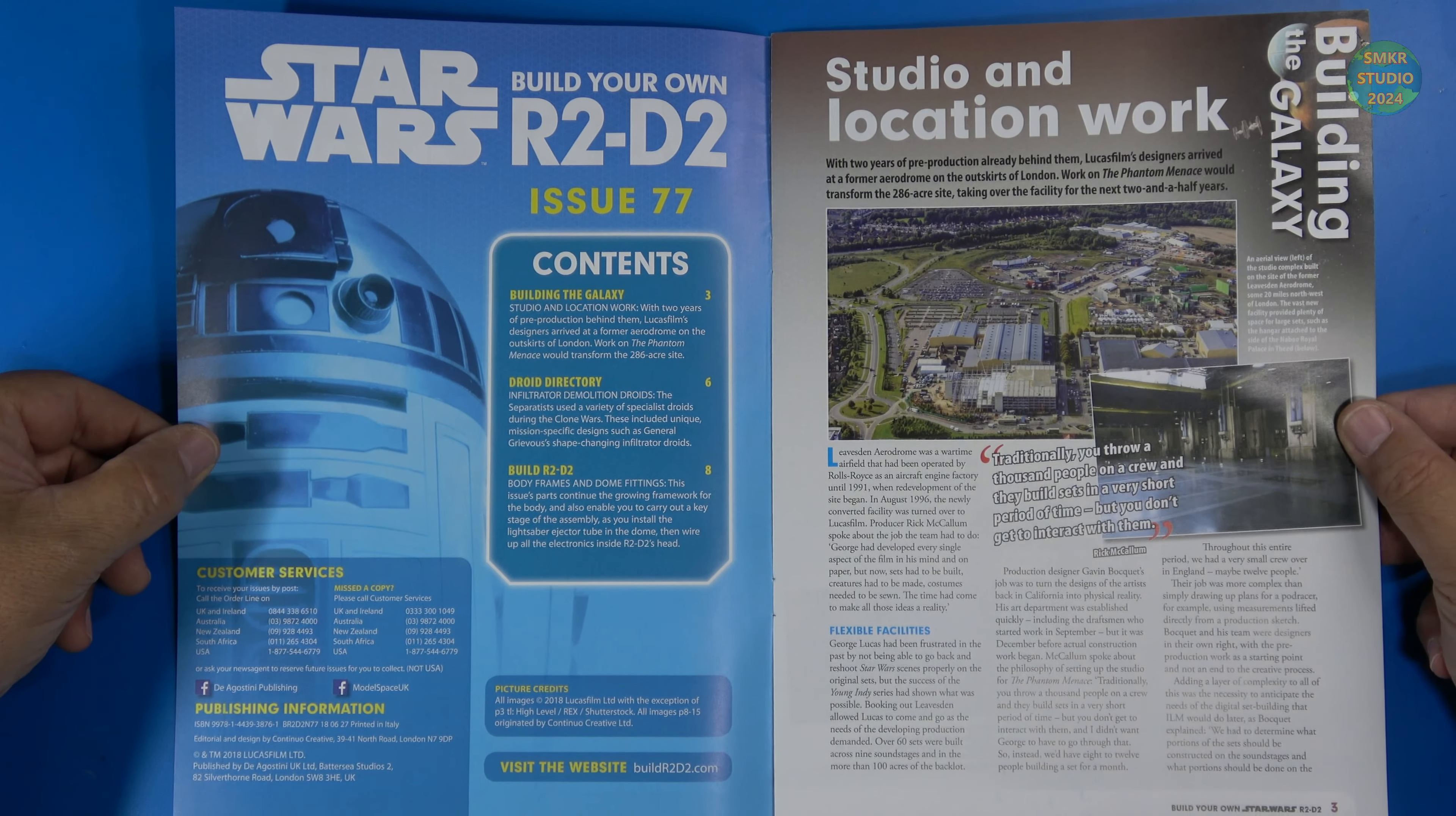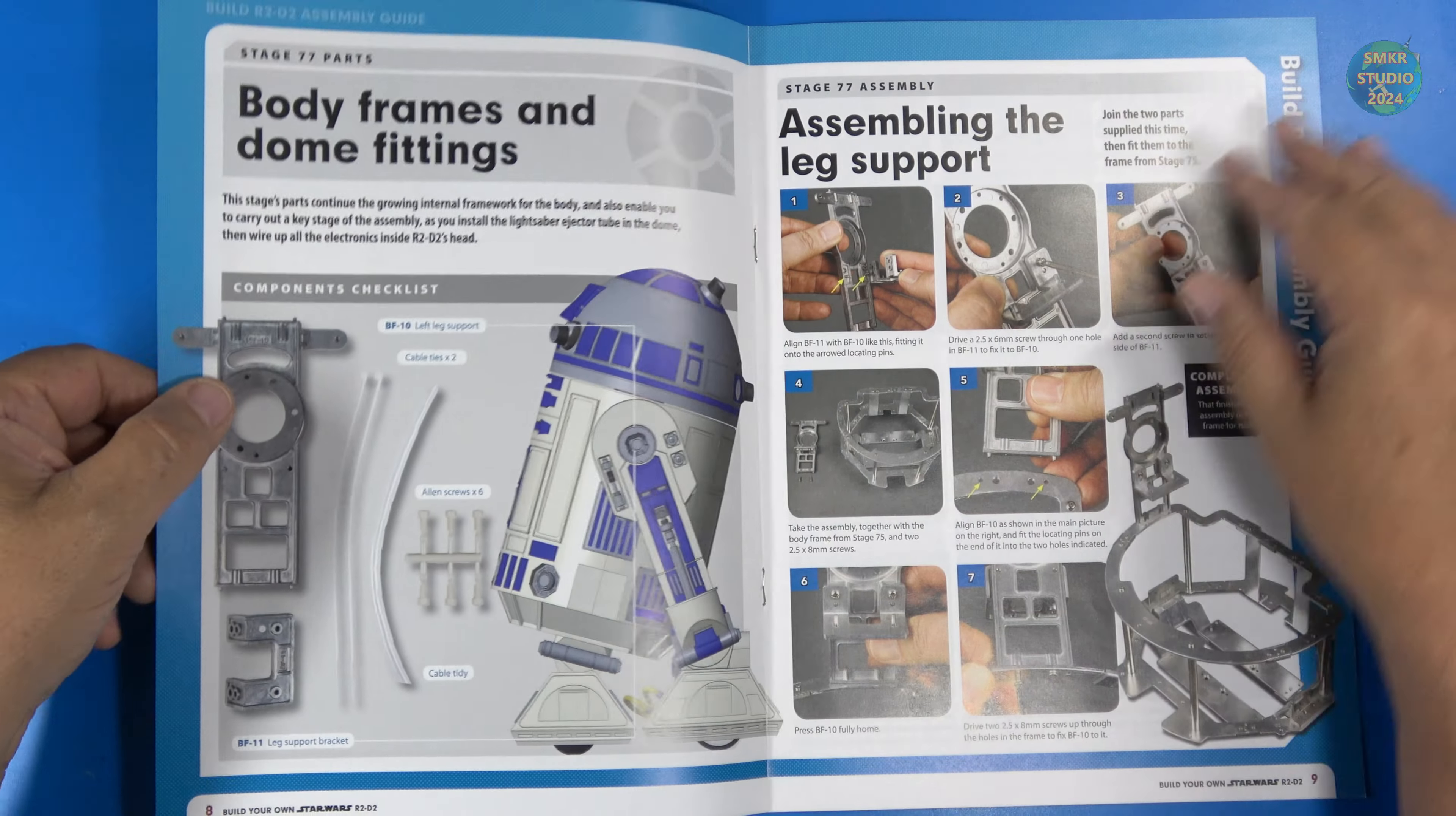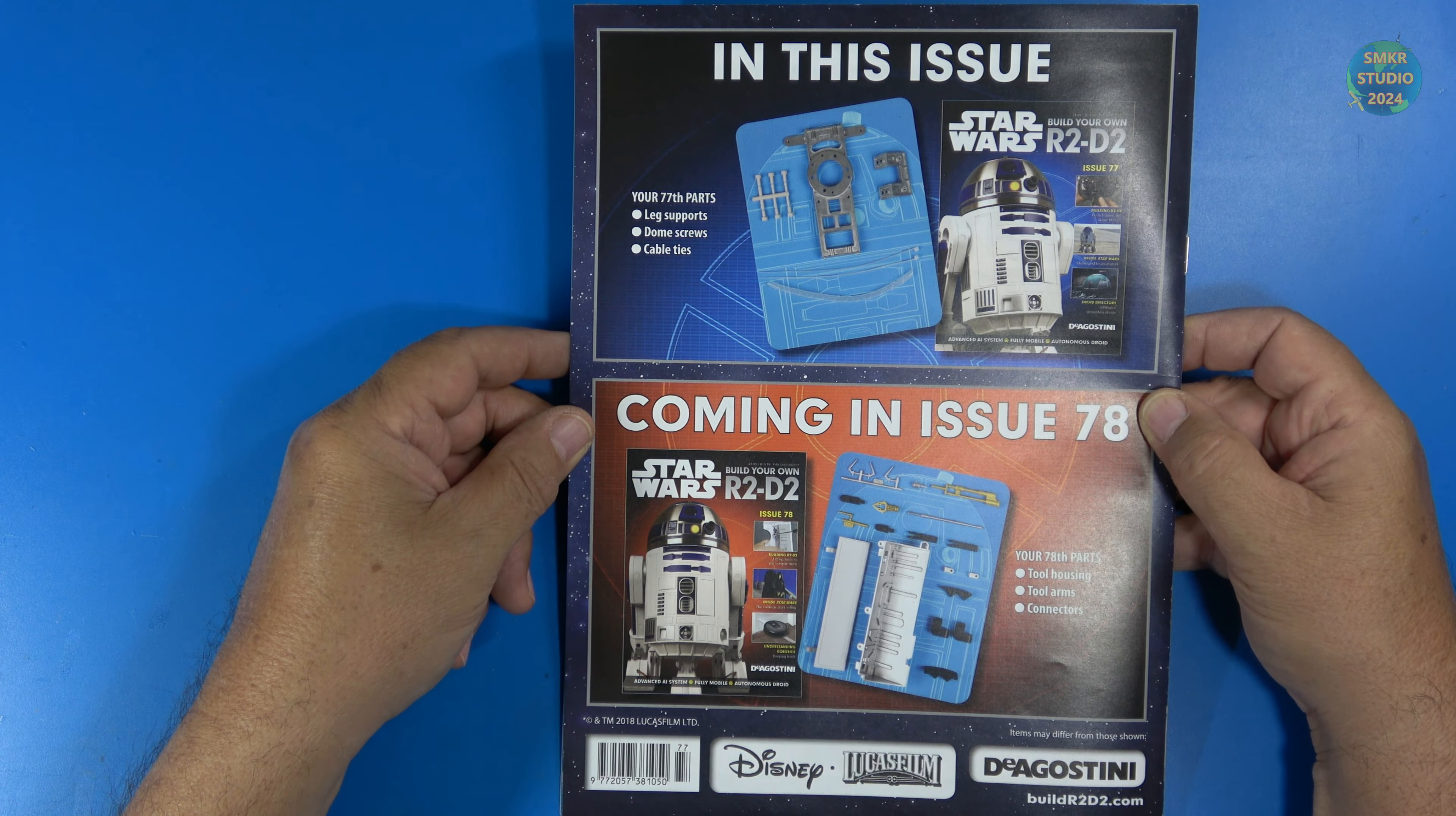Let's look at the articles in the magazine. Building the Galaxy, studio and location work, great coverage here. The infiltrator demolition droids, this is part of the droid directory. Of course the assembly instructions and a preview of what's up and coming for 78, the droid directory tool housing, tool arms and connectors.